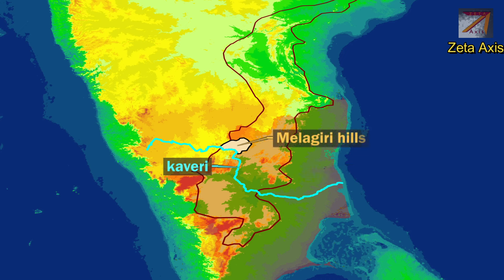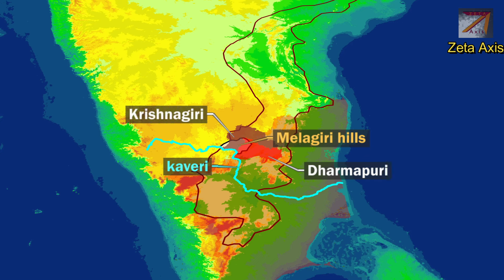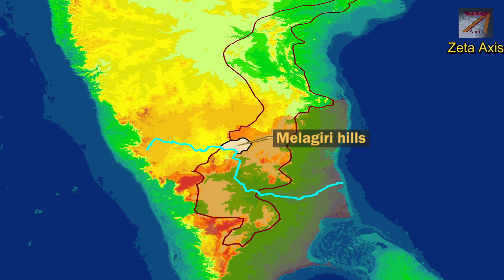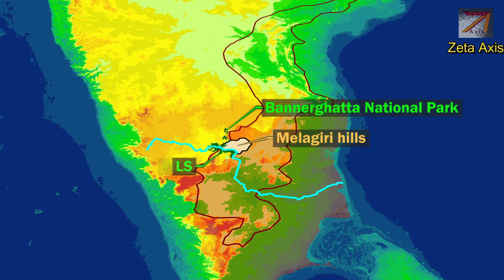The next important mountain range is the Melagiri mountain ranges, also part of the Eastern Ghats and located in Tamil Nadu. They lie between Dharmapuri and Krishnagiri districts of Tamil Nadu on one side and are bordered by Kaveri on the Karnataka side. It is elephant country and contains two traditional elephant corridors. Bannerghatta National Park is located to the north-east and Cauvery Wildlife Centre is located to the south. The forests are largely dry deciduous with some stretches of shola forests.